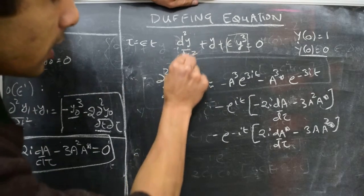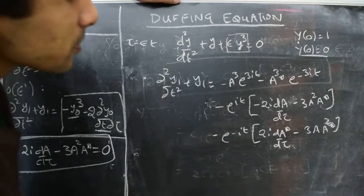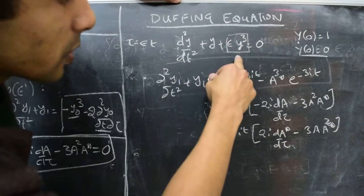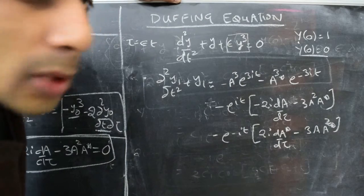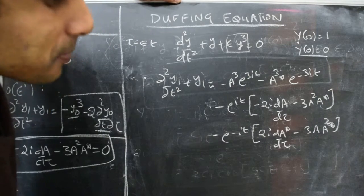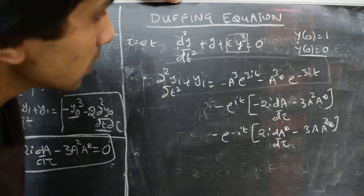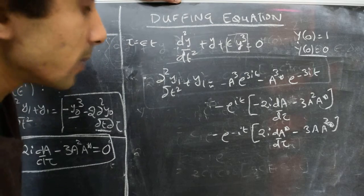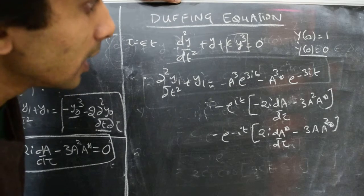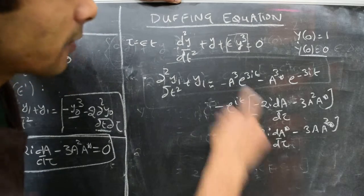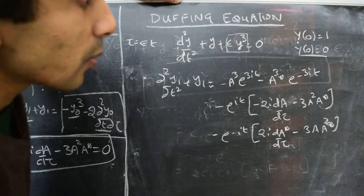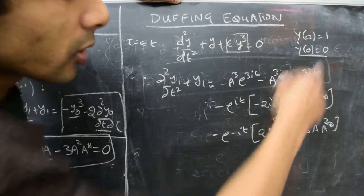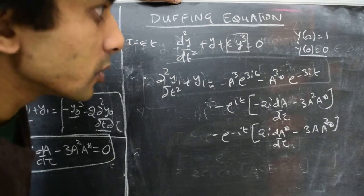Just as a reminder, the Duffing equation is an equation of this form: d²y/dt² plus y plus epsilon y³ equals 0, where epsilon is a small positive parameter. y is the dependent variable and t is the independent variable, which we take as a time variable and it's suitably non-dimensionalized. We're solving this subject to the initial conditions: y at t equals 0 is 1, and dy/dt at t equals 0 is 0.